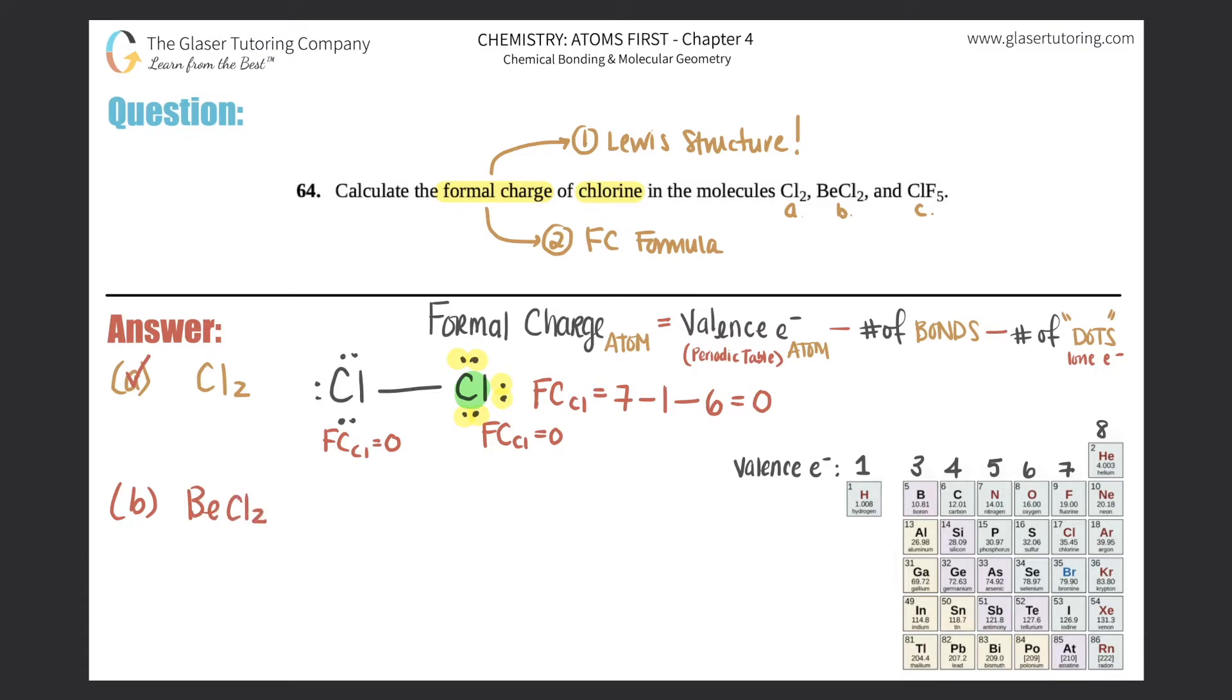B. BeCl2. Okay, so Lewis structure comes first. Pause the video if you want to, and then check. But it should be two chlorines bound singly to Be, and then these six lone electrons,